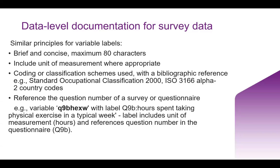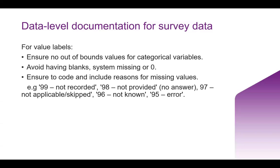Include a reference to the question in the survey or the questionnaire. The example here does all of the above. Q9BHEXW is given the label Q9B: hours spent in physical exercise in a typical week. The label clearly includes the unit of measurement and a reference to the question as well. Not only does this make it easier for re-users, but it makes it easier during the analysis as well. You should add value labels too, making sure that there are no out-of-bounds values for categorical variables.